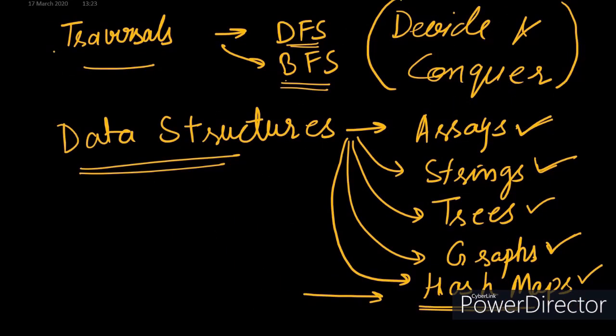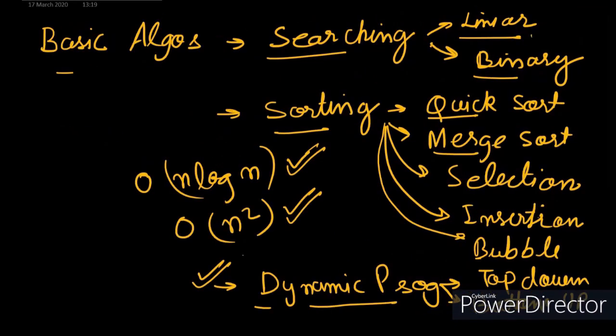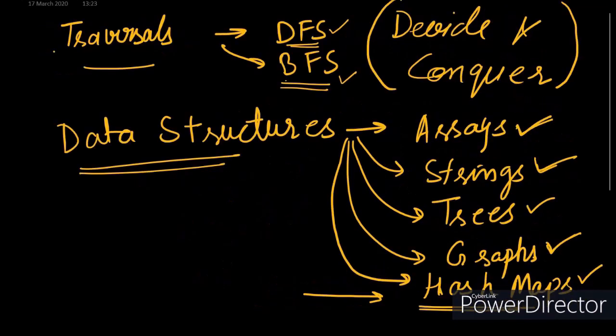The next algorithms are DFS and BFS. Once you are done with the graph data structure, you can go for these algorithms — they are basically the graph and tree traversal algorithms. Then comes divide and conquer; quicksort and merge sort actually fall under the divide and conquer category.